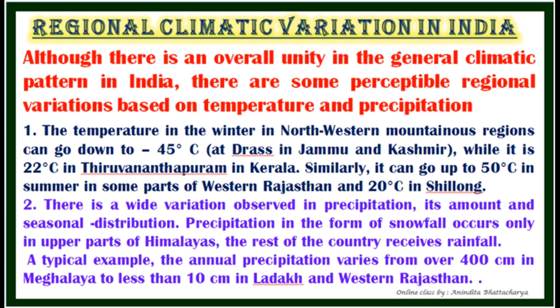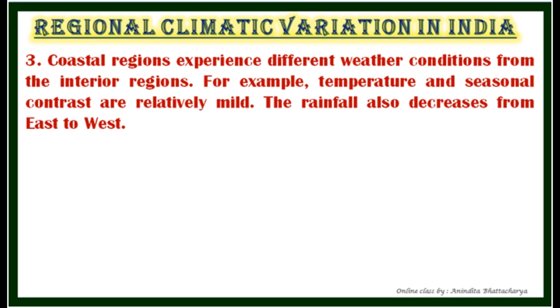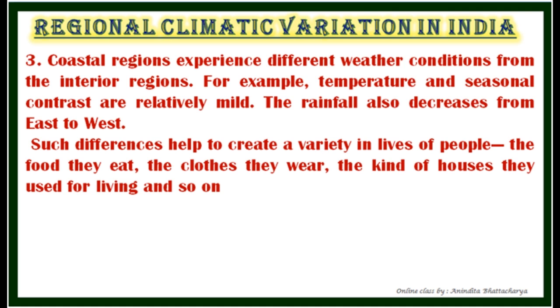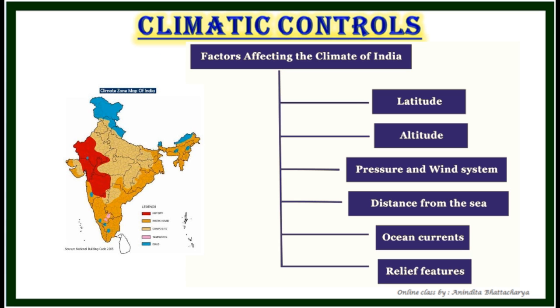There is also wide variation in precipitation — its amount and seasonal distribution. Precipitation in the form of snowfall occurs only in the upper parts of the Himalayas; the rest of the country receives rainfall. Annual precipitation varies from over 400 centimeters in Meghalaya to less than 10 centimeters in Ladakh and western Rajasthan. Coastal regions experience different weather conditions from interior regions; for instance, temperature and seasonal contrasts are relatively mild in coastal areas. Rainfall also decreases from east to west in the northern plains. Such differences create variety in the lives of people — the food they eat, the clothes they wear, and the kind of houses they live in.